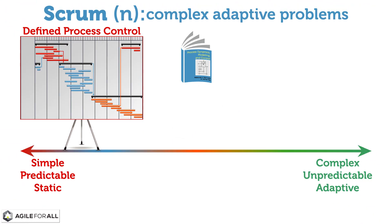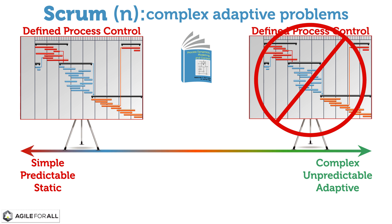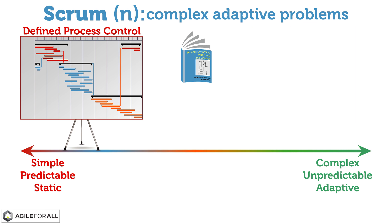Ogunaki and Ray are telling us that the defined approach doesn't work when things are complex and adaptive, and that we should instead use something called empirical process control. So let's explore what that means.